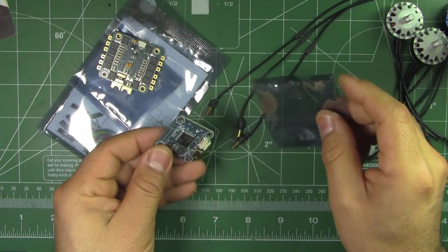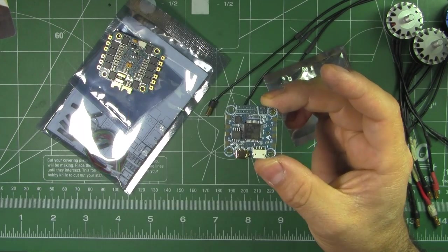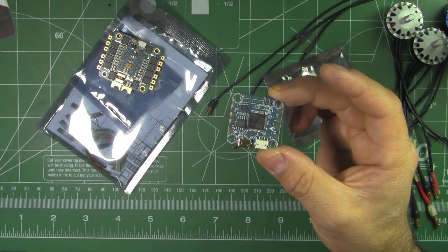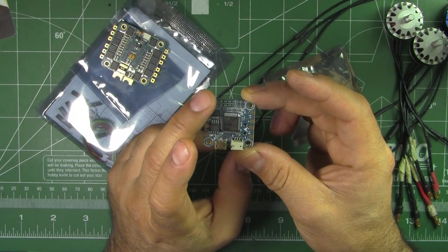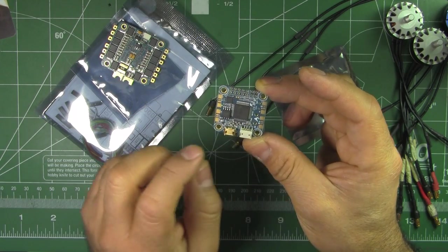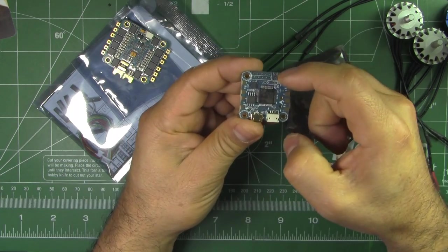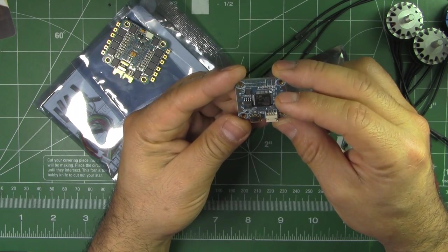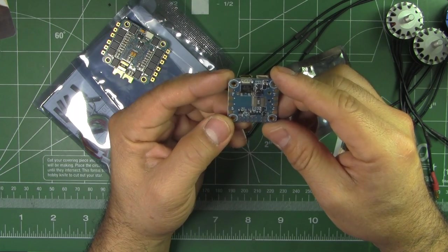They also sent their F4, this one they call the iFlight Revo BF4 flight controller and it's 30 by 30 millimeters. I see the spacing on the holes is 25 by 25 mounting holes. So this one's supposed to be Betaflight compatible Revo. I guess it takes the Revo target.